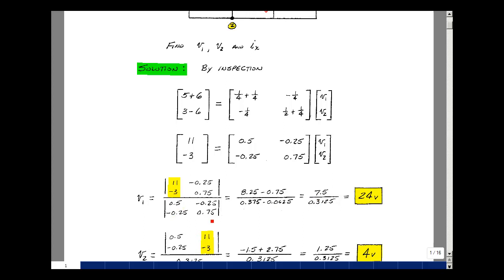So I have 0.5 times 0.75, that's 0.375, and then minus this product, which is a minus 0.0625, and that's 0.3125. And that ratio is 24 volts.